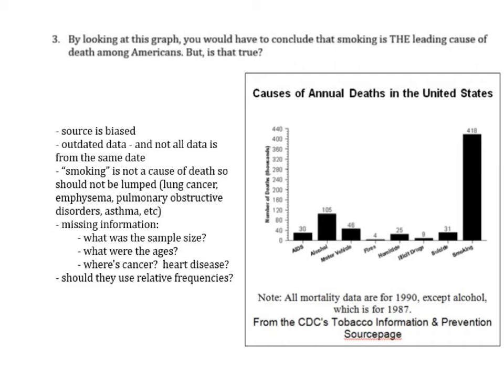So I missed number three in the original video, so we're going to go over the types of misleading statistics in this example. This graph shows the causes of annual deaths in the United States. The y-axis says the number of deaths in thousands, so this would be 40,000. By looking at this graph, you would have to conclude that smoking is the leading cause of death among Americans — with 418,000 deaths per year. But is that true?